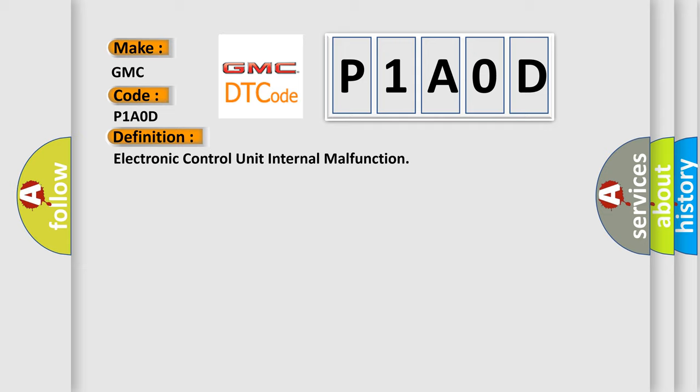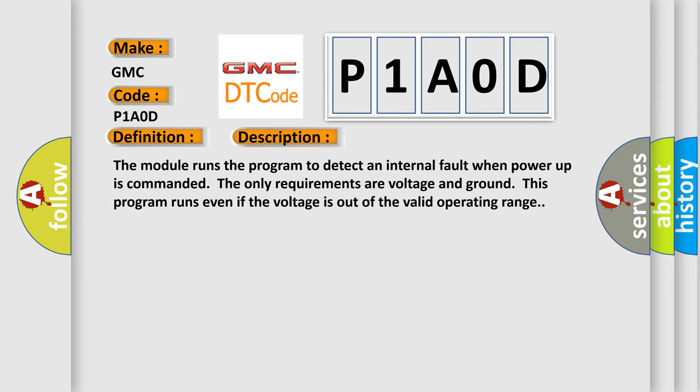And now this is a short description of this DTC code: The module runs the program to detect an internal fault when power-up is commanded. The only requirements are voltage and ground. This program runs even if the voltage is out of the valid operating range.